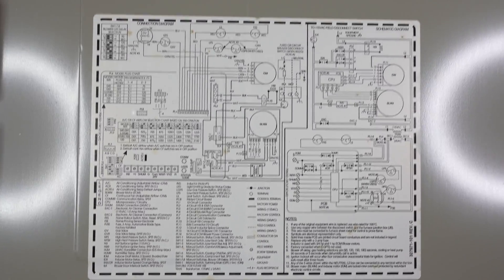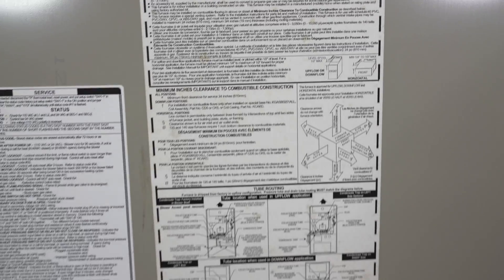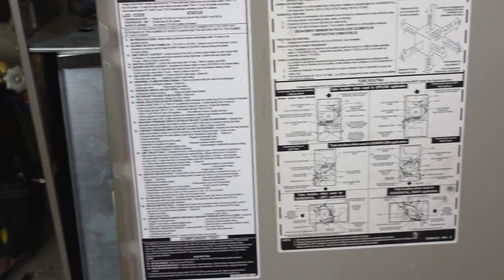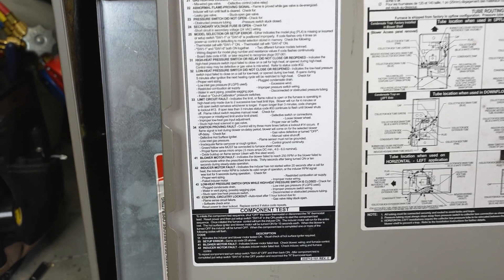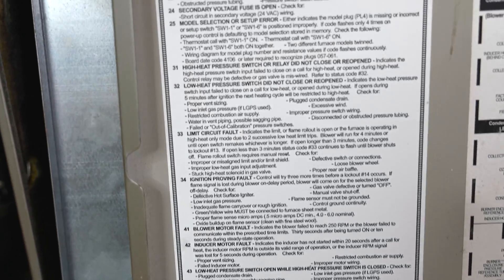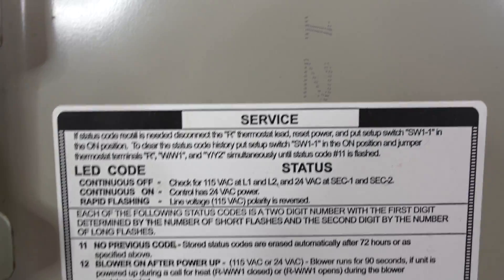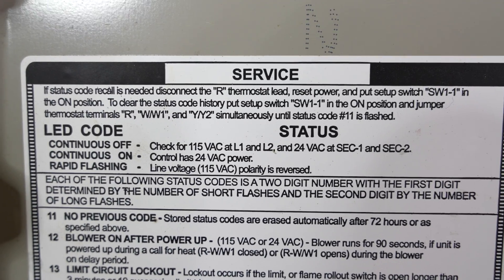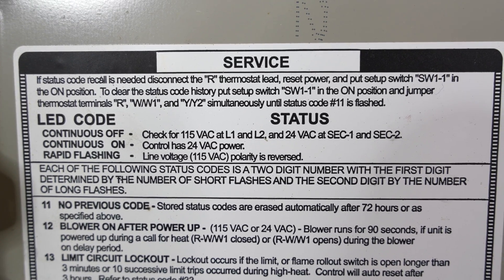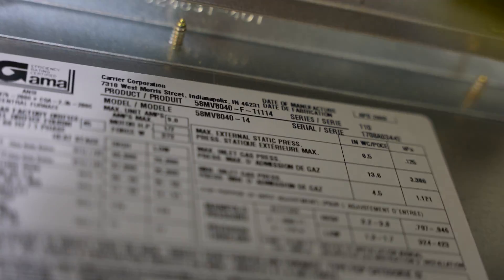I really like how Carrier did it on this furnace. They have a wiring diagram on the back of the door, installation instructions, and the error codes all on the back. With all the information on the back of the door, you might not even have to pull out the install manual. But if you can't find any recall information on the back of your furnace doors, then you're going to have to consult your install manual.